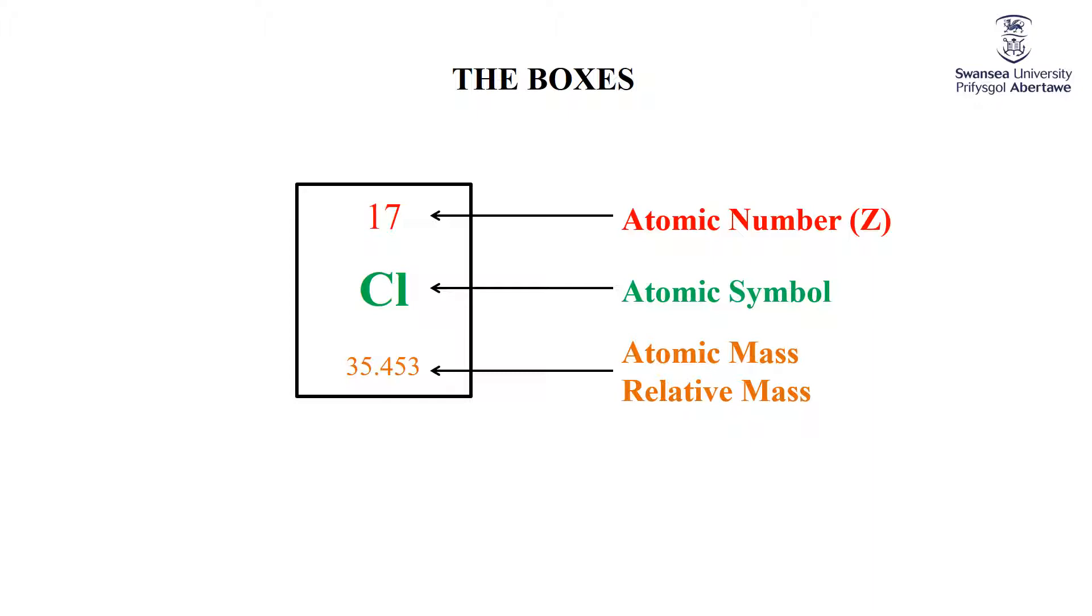Atomic number of a given element tells you that every single atom of that element has that atomic number, has that number of protons, has that number of electrons. The relative mass, the macroscopic mass that we have to use when we're thinking about an amount of a particular element, is the weighted average of all of the isotopes. All the atoms have the same atomic number. Different isotopes have different numbers of neutrons. The observed relative mass is the weighted average of all of those stable isotopes.